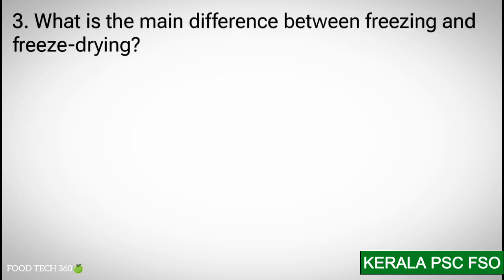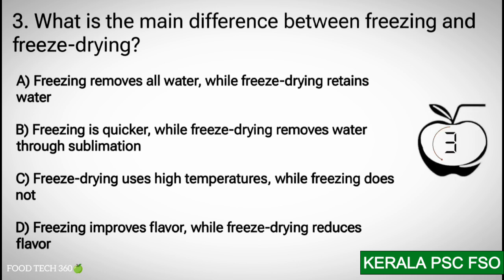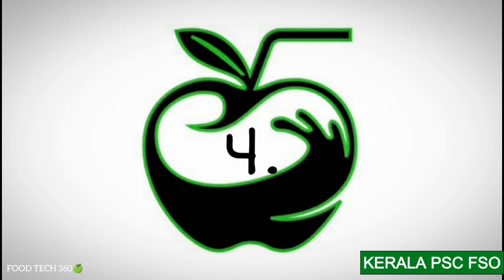Question number 3: What is the main difference between freezing and freeze drying? Options: A) Freezing removes all water while freeze drying retains water, B) Freezing is quicker while freeze drying removes water through sublimation, C) Freeze drying uses high temperature while freezing does not, D) Freezing improves flavor while freeze drying reduces flavor. Correct answer: B) Freezing is quicker while freeze drying removes water through sublimation.